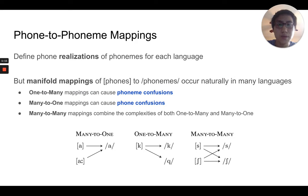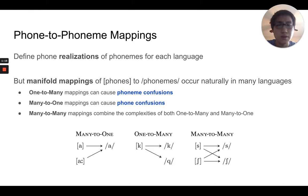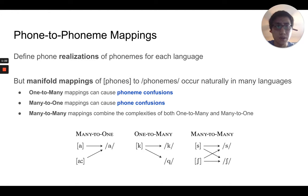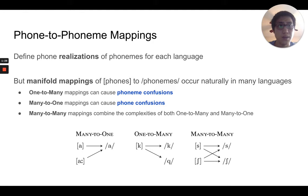What's happening is we're defining phone realizations of each phoneme for each language, and what we end up with is that for each phone we're mapped to many phonemes, and also vice versa — a phoneme could be mapped to many phones. The scenario is actually quite manifold, and there's a lot of ambiguity that can cause confusions at both the phone and the phoneme level.